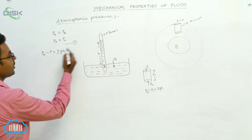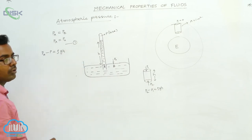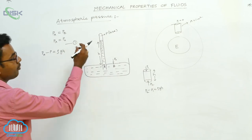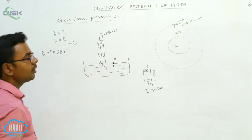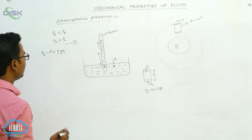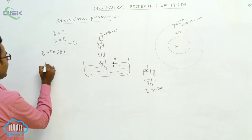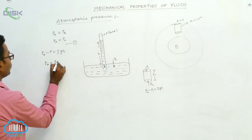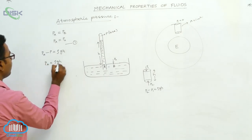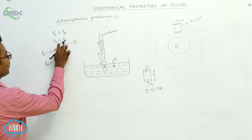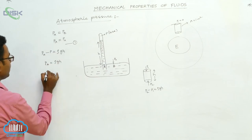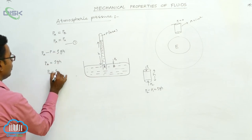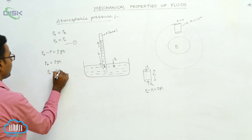Now P is negligible because the mercury vapors exert a very small pressure. So P is negligible, and we write PA equals rho g h. PA is nothing but atmospheric pressure, so atmospheric pressure PA equals rho g h.